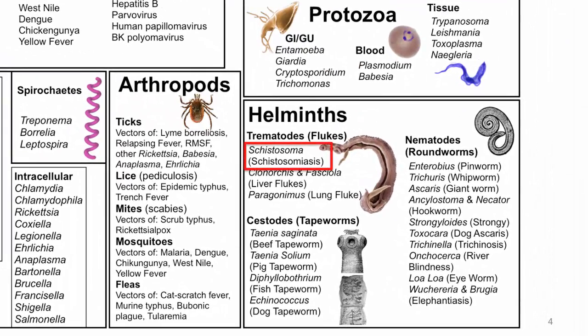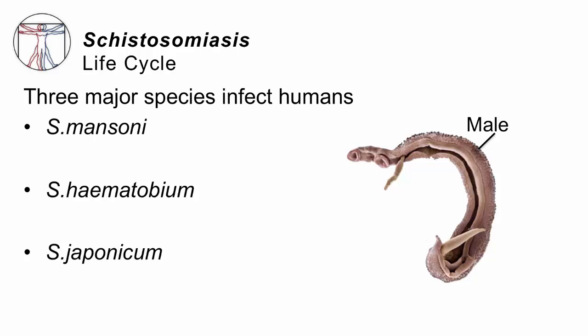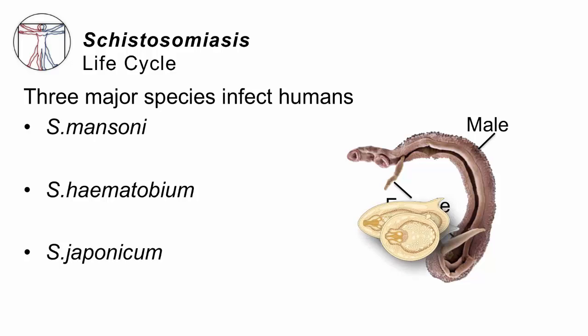We're in the trematode or fluke section of our parasite map. Schistosomes are blood flukes, and although there are three main species — Mansoni, Hematobium, and Japonicum — they all share basically the same adult morphology. The male, at a glance, looks like a round worm, but he is flat or fluke-shaped. He has folded himself in half to form a central groove or cleft or schist, and into that schist goes the female. He holds on to her so they can engage in continuous sexual intercourse throughout their entire adult lives — seven years, perhaps, continuously pumping out eggs.